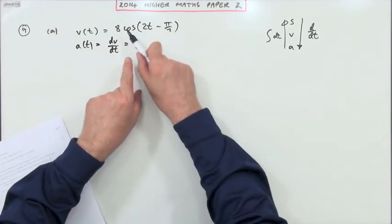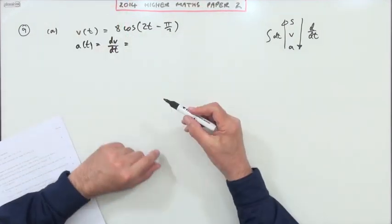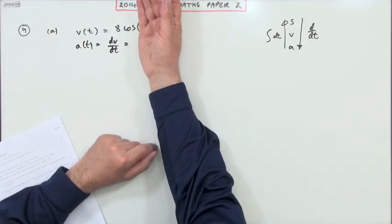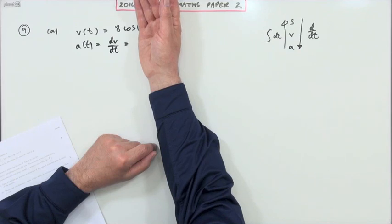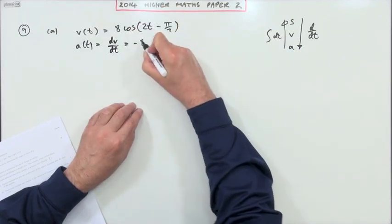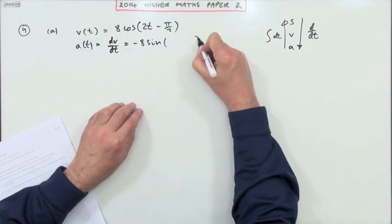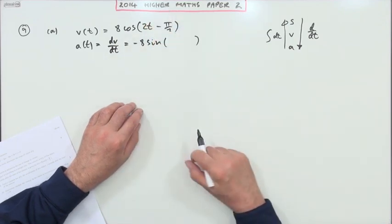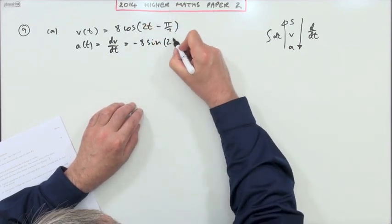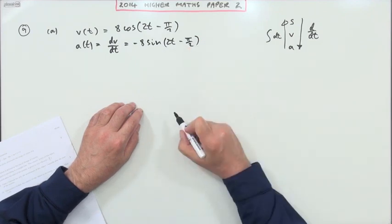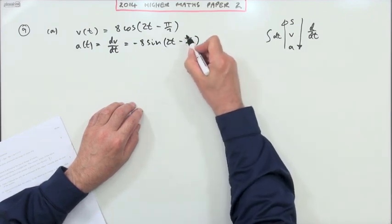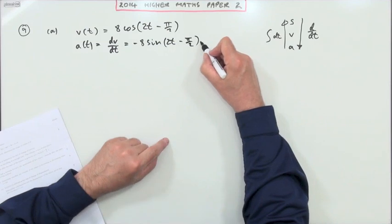Differentiating this. Now watch, of course, because it's a function of a function here. Differentiating the outer function, cos goes to negative sine. So it'll be negative 8 sine of the thing it's operating on. Now consider the thing it's operating on. 2t minus π/2, a little linear term. The derivative of that with respect to time is just 2.